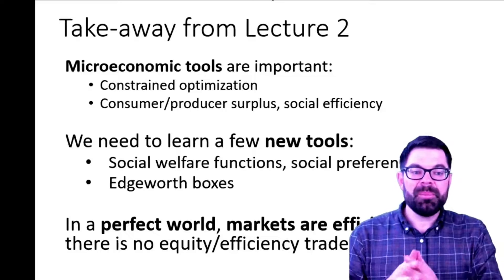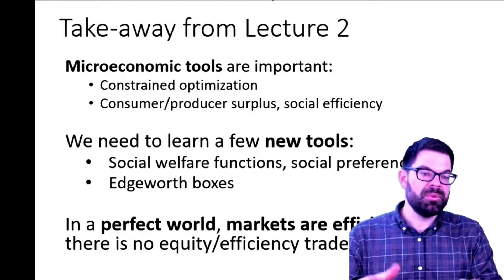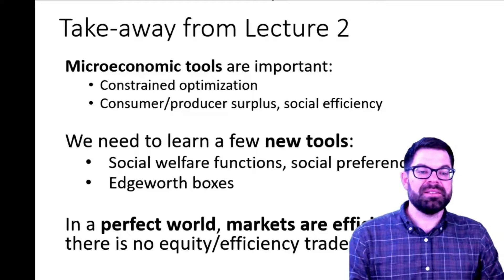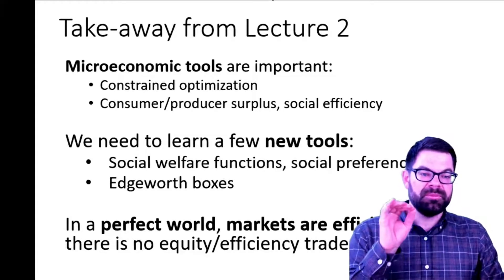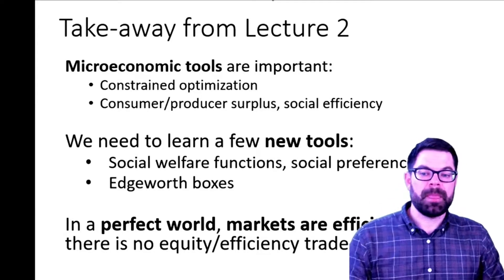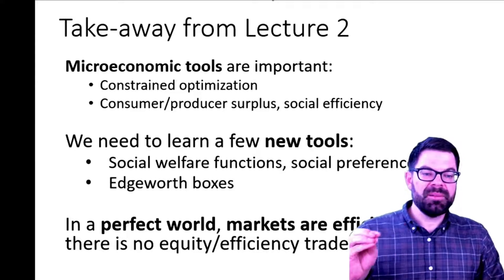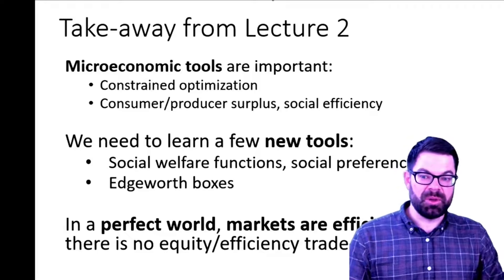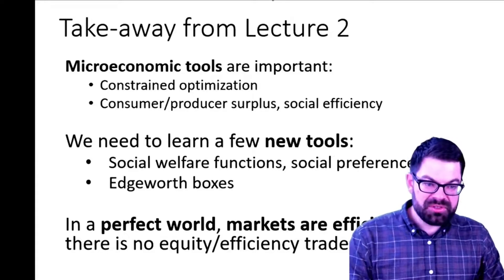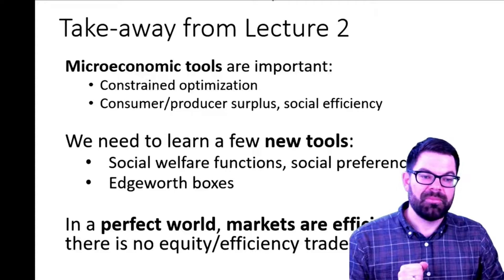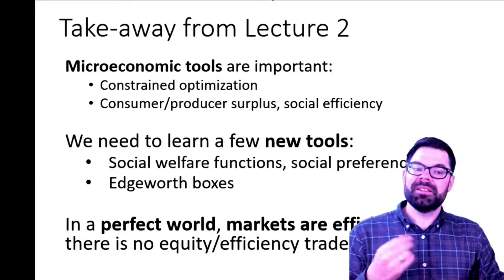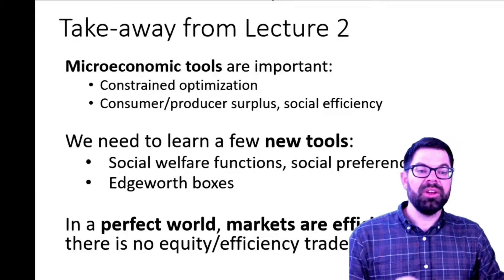We've already put Edgeworth boxes to good use by discussing the two fundamental welfare theorems. The first one, going back to Adam Smith, says that if we leave a market to its own devices and don't intervene, the market equilibrium — the so-called competitive equilibrium — is Pareto efficient and efficiency maximizing. We've also learned that in a perfect world, what economists call a first-best world, we can actually redistribute through lump-sum transfers without any efficiency loss.